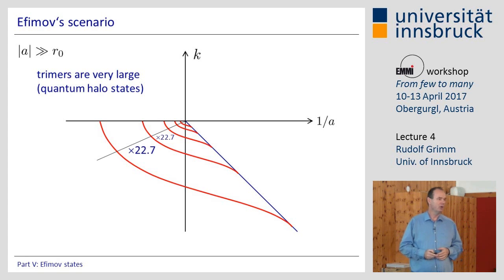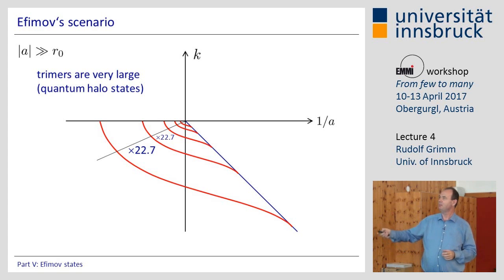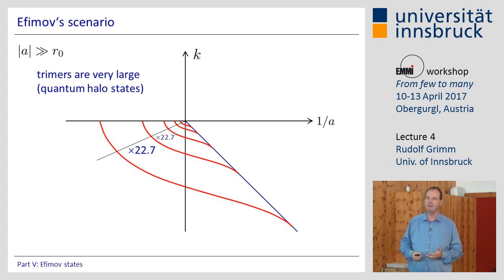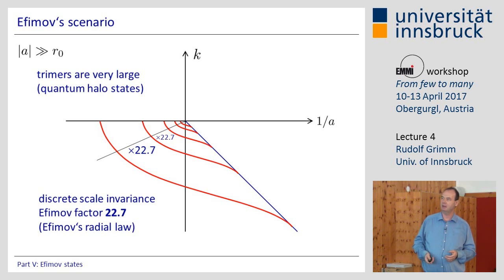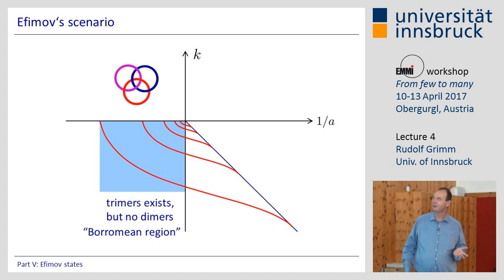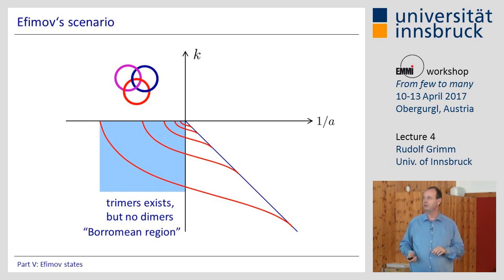The famous scaling law: this is an inverse length scale, and K as it was defined is also an inverse length scale. I can start at the center of this plot and draw a radial line in any direction — along the threshold or along the K scale. I always get discrete scaling behavior with a factor of 22.7. This is the famous radial law with discrete scaling invariance following a factor of 22.7. This is a region where trimers exist but no weakly-bound dimers, and as Lerd already explained, this is the Borromean region — a system bound when three objects are present, but if you take one away, the remaining two are not bound.